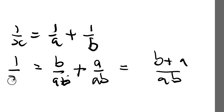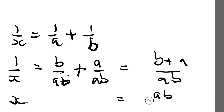This equals 1 over X, so we can turn this upside down and get X equals ab over a plus b — put it in alphabetical order. So there you go.